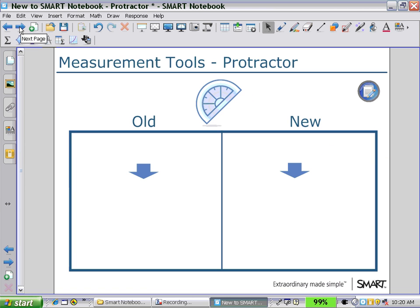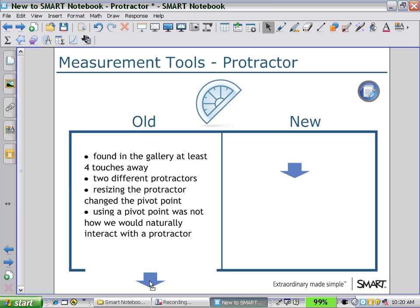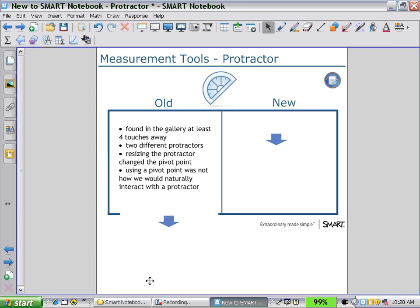So what has been changed from using the older version of Notebook to newer version? We could get a protractor from the gallery in the older version, but it was at least four touches away. We had to use two different protractors to measure in opposite directions. Resizing the protractor changed the pivot point, which could be very problematic. And using a pivot point was not how we would naturally interact with a protractor in the older version.